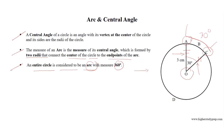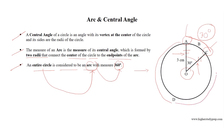The major arc created by endpoints A and C, which is ADC, has a measure of 360 degrees minus 30 degrees, which results in 330 degrees.